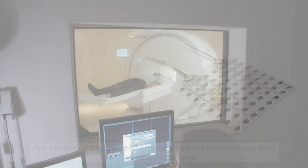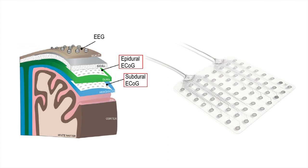ECOG grids consist of small, disc-like electrodes that are placed epidurally or subdurally. Grids and distance between electrodes can vary in size, which depends on the region of interest.